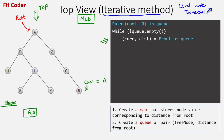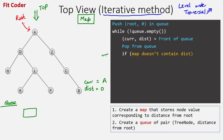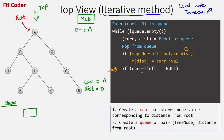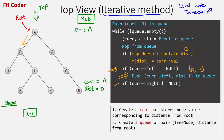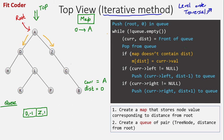We run a while loop until the queue is not empty. We check the front of the queue: current is A and distance is zero. We pop A comma zero from the queue. We check if the map doesn't contain distance zero — it doesn't, so we create a new key zero pointing to A. Left of A is D, so we push D comma minus one to the queue. Right of A is Z, so we push Z comma one to the queue.